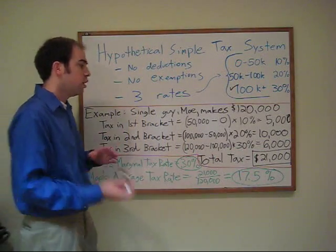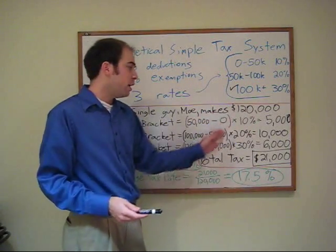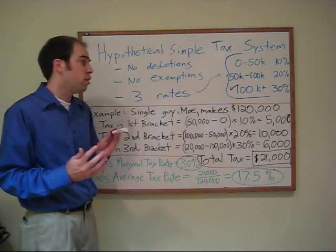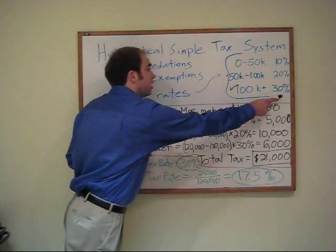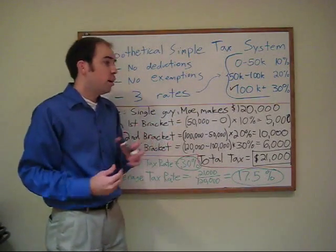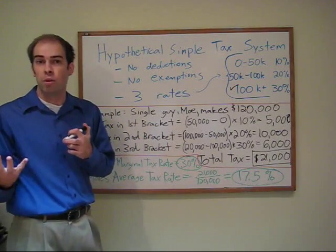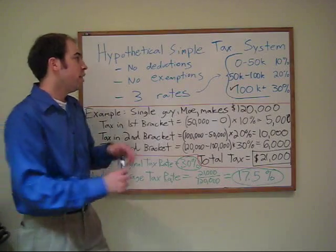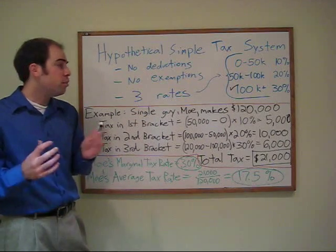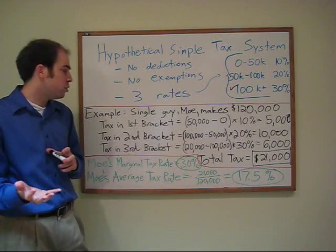Moe's total taxes would be $21,000, which is the sum of how much is taxed in the first bracket, the second bracket, and the third bracket. Moe's total tax bill is not $120,000 times 30%, even though he's in the 30% tax bracket and each additional dollar Moe earns would be taxed at 30%. His entire tax bill is not equal to 30% times $120,000. That is the misinterpretation many have made on the marginal tax rate study the Tax Foundation has released.